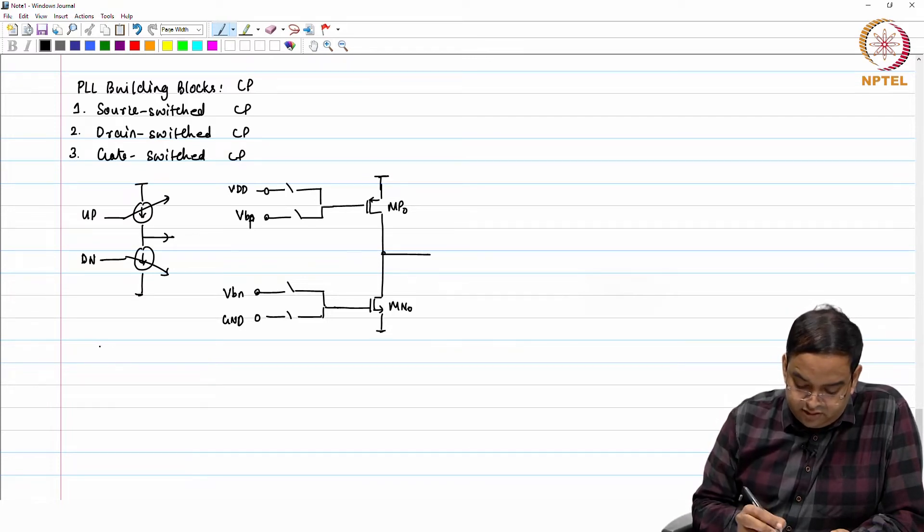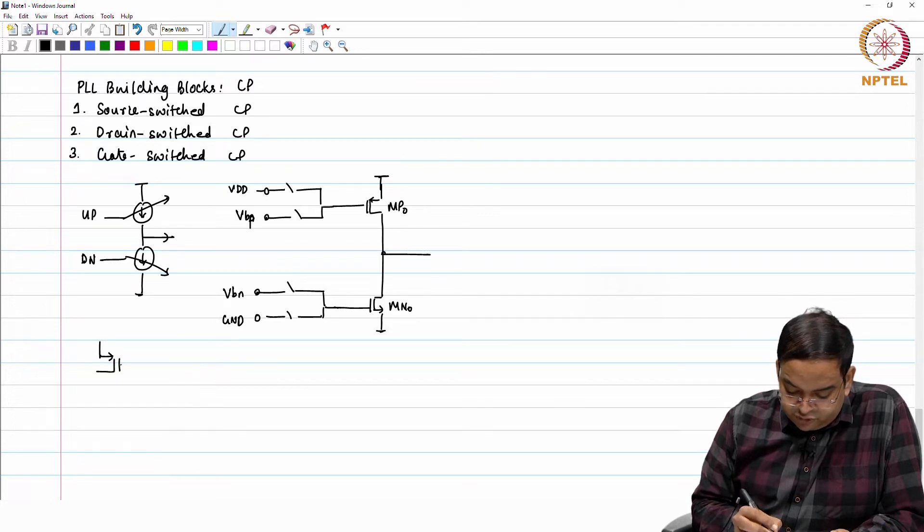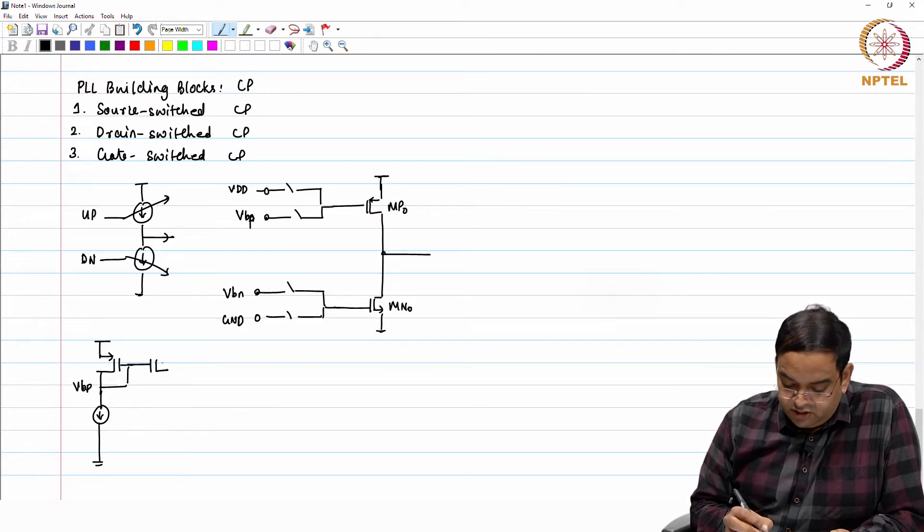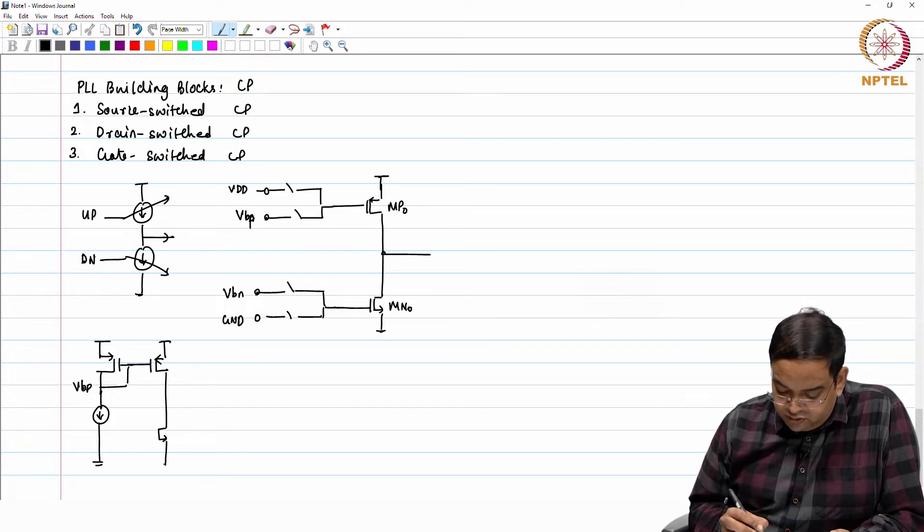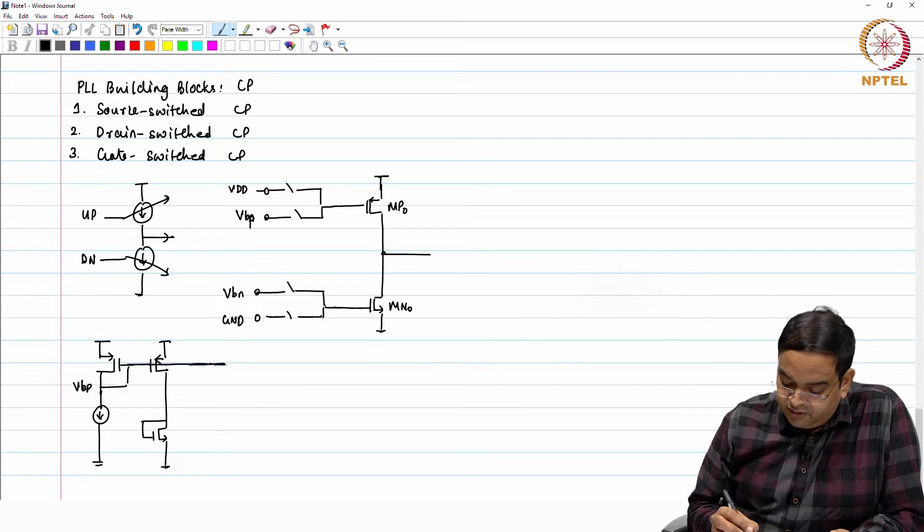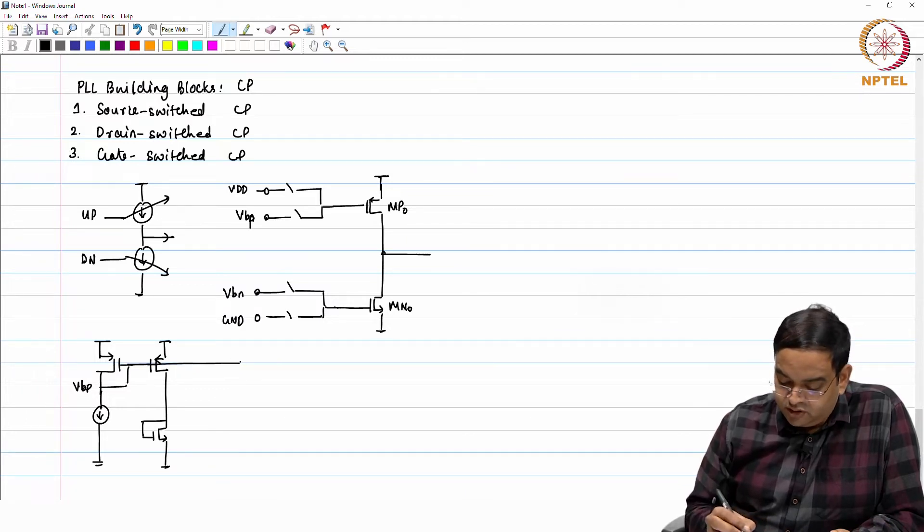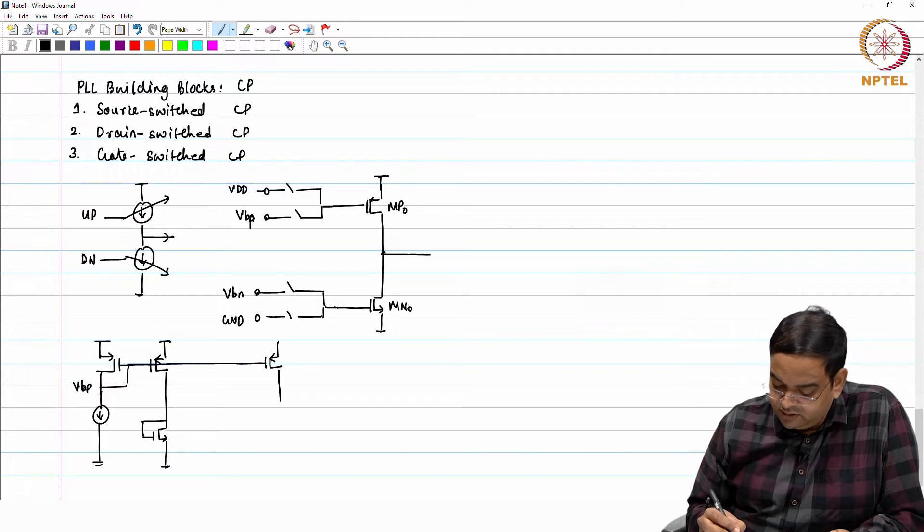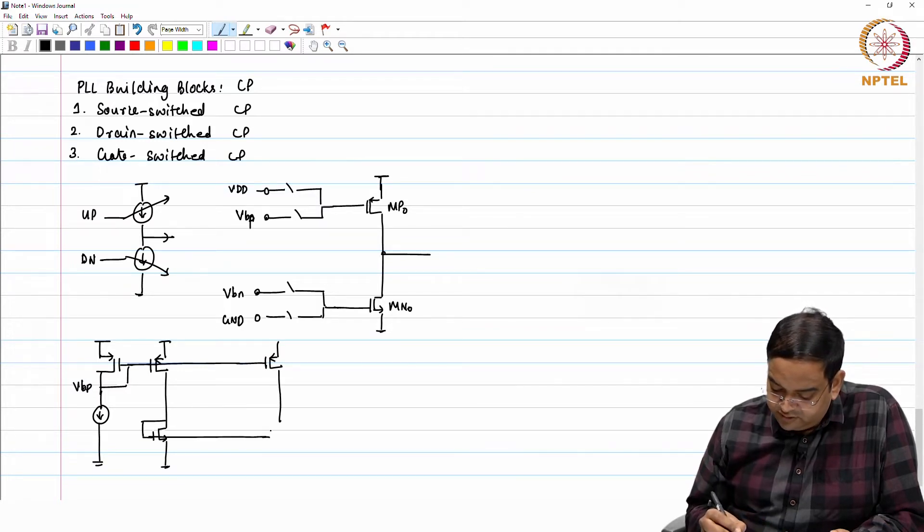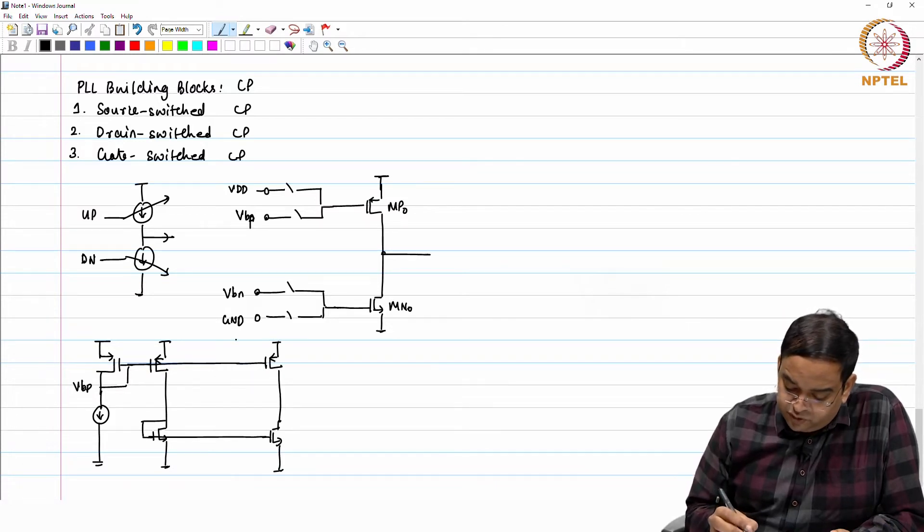What I will do is the following. I have a PMOS current source with a diode connected to generate the desired bias voltage VBP and you will use only one current source. You generate the other bias voltage also VBN. This is what we generated. Now, you have this particular voltage either you can add a switch or what you can do is you can connect directly to this PMOS.